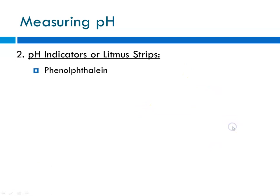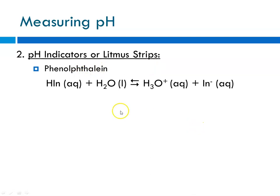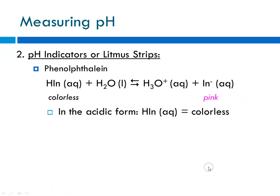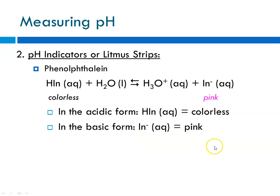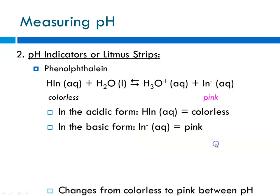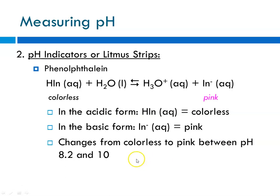pH indicators, or litmus strips — the one you encounter most commonly is phenolphthalein. Phenolphthalein is colorless until it encounters base, and then in the presence of base it turns a bright pink. So in its acidic form it's colorless, and when it becomes basic it turns pink. It changes from colorless to pink in the pH range of 8.2 to 10.